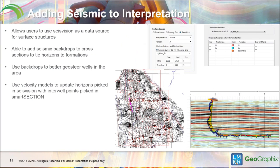Adding seismic data to the project allows you to use SizeVision as a data source for your surfaces — this is a new feature in 2015. You're also able to add seismic backdrops of your seismic data to a cross-section to help you correlate tops or geosteer in an area. You can do this with a velocity model by tying horizons to formation tops and updating them both in Smart Section and in SizeVision, working hand-in-hand.